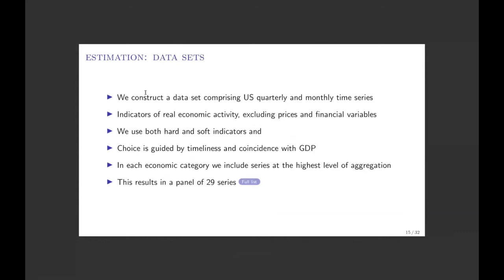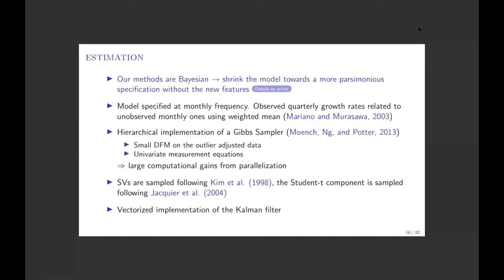On estimation: we use US data, with quarterly and monthly time series indicators of real economic activity — no prices or financial variables. We track real activity with both hard data and soft indicators (surveys), with variable choice mirroring our previous paper guided by timeliness and coincidence with GDP, including data only at the highest level of aggregation. This gives us 29 series.